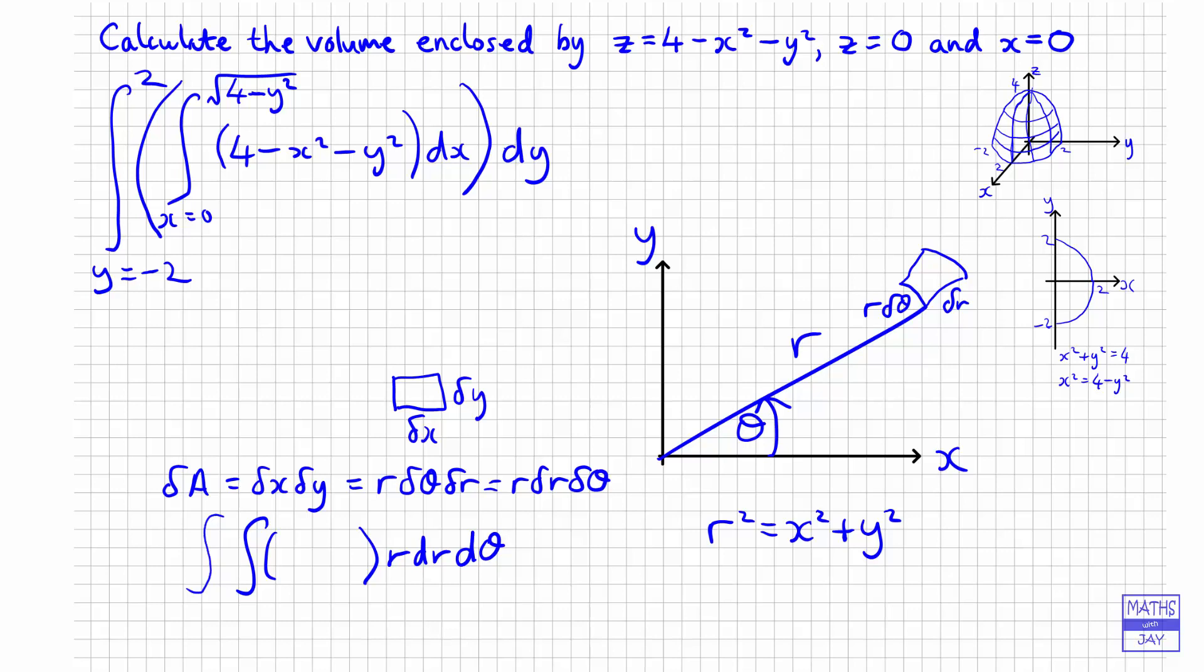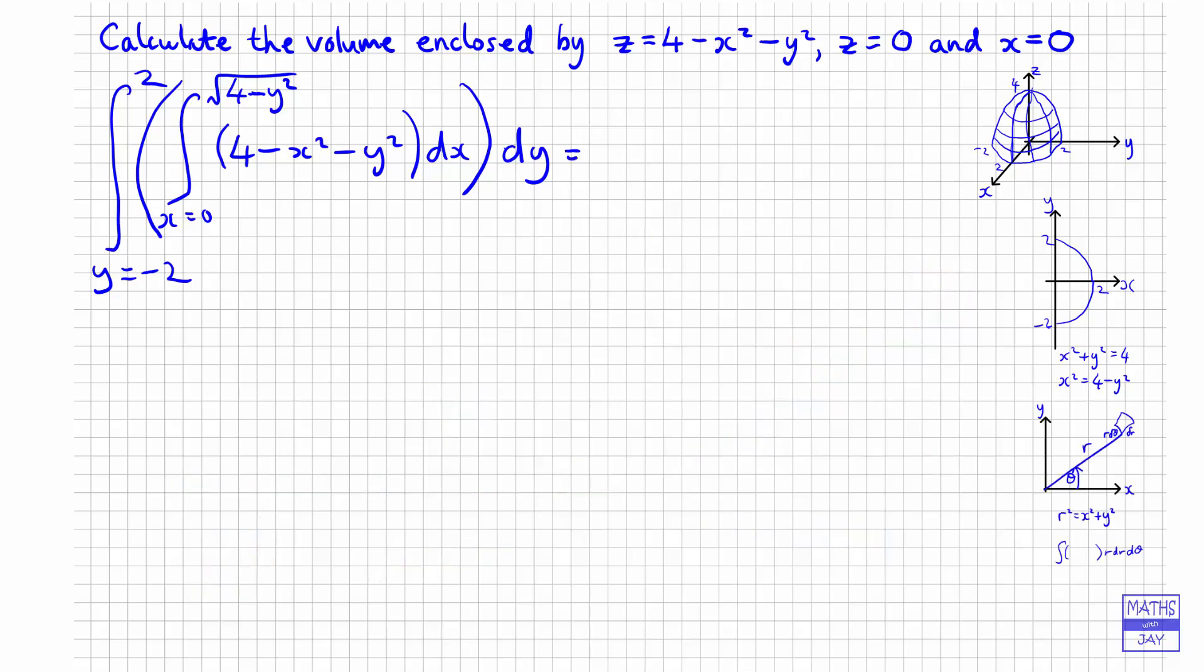So let's go back to our integral and put it in terms of polar coordinates. So we've got a double integral. Our angle is going to go from looking at our original diagram with the x and y, the x and y plane. Well, y was going from minus 2 up to 2, wasn't it?